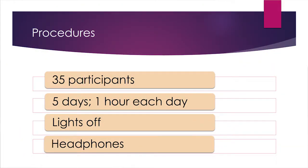For our study, we used 35 participants. The participants were recruited from assisted living facilities and from newspapers around the Wichita area. Each participant came in for five days for a total of one hour each day. They did the study with the lights off, so it was done in a dark room and they were in front of a computer. They also all got headphones so that they could receive feedback whenever they answered incorrectly.